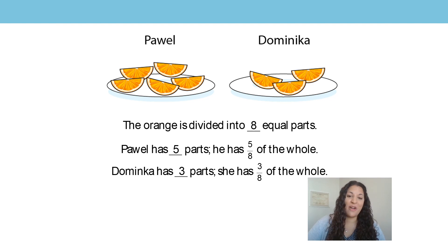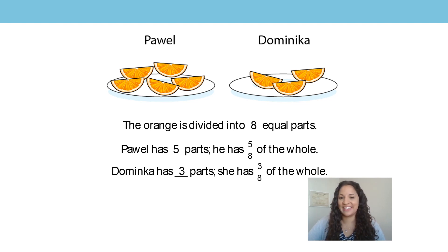So Powell has 5 eighths and Dominica has 3 eighths. Hopefully you got that too when working on this at home.